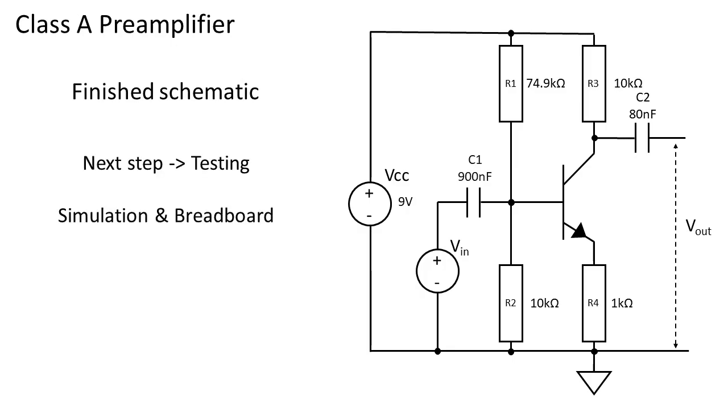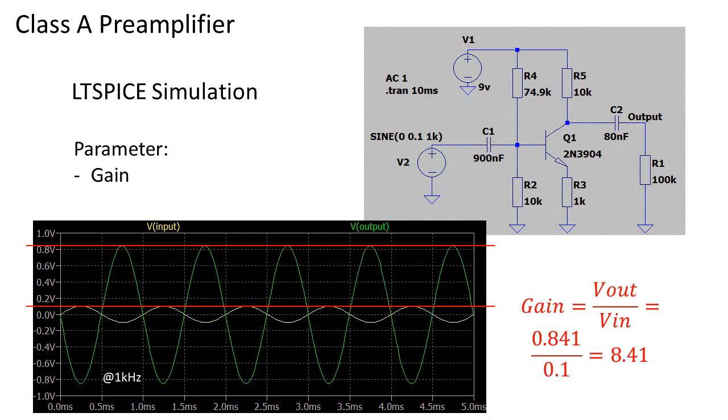To test the design it will first be simulated and after that the circuit will be built and tested on breadboard. We will validate the gain of the circuit and the maximum headroom. We feed the simulation a signal with an amplitude of 100 millivolts. On the output we measure a signal with an amplitude of 841 millivolts.